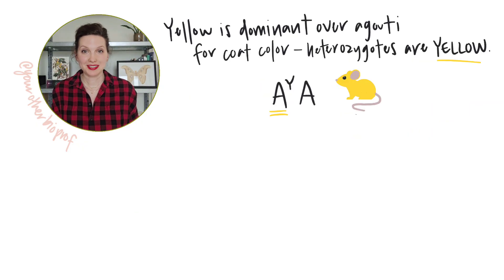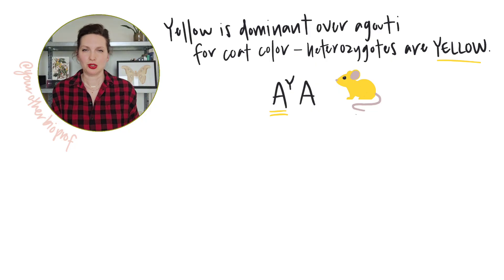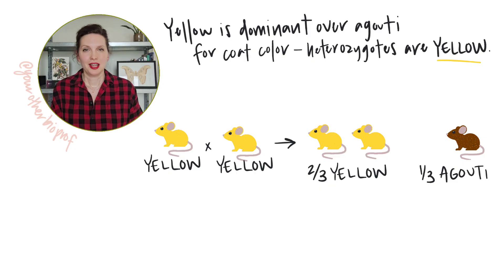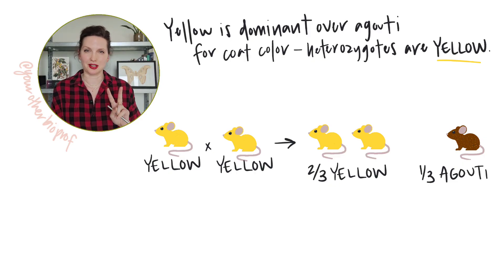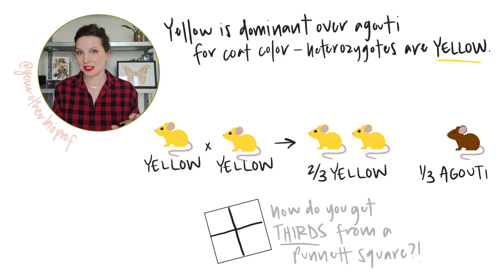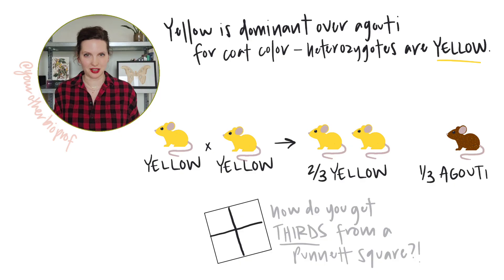Through a variety of crosses, it was determined that yellow is dominant to agouti — you only need one yellow allele to get the yellow phenotype. If you take two yellow mice and breed them together, the offspring have a phenotypic ratio of two yellow to one agouti. And if you've spent some time working with crosses, that's not a Mendelian ratio you'd expect to see, right? So what's going on here?